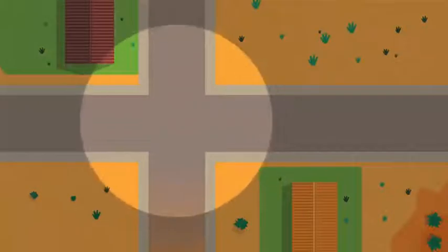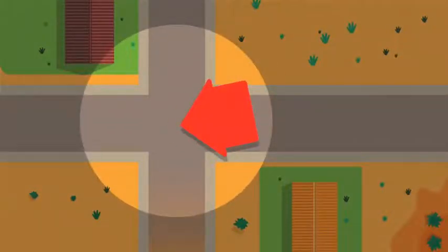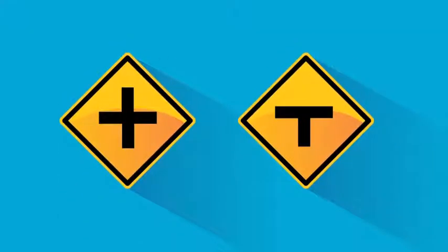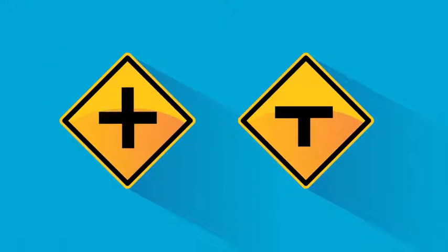An intersection is when two or more roads meet. This can be two roads forming a cross, or two roads forming the letter T.